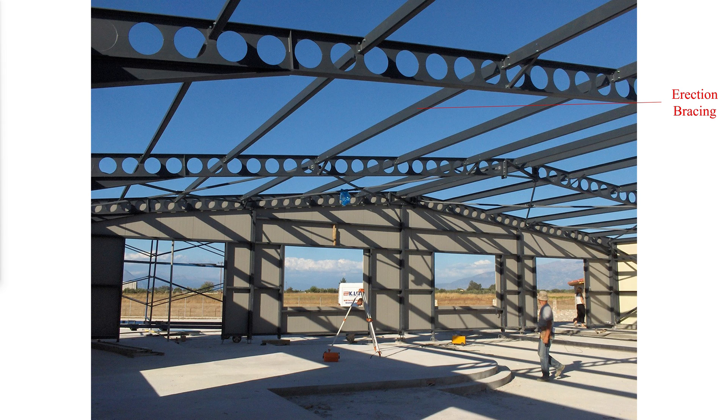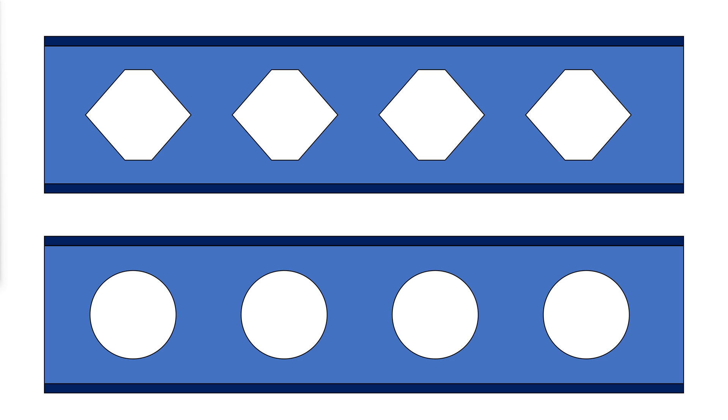The bracing requirements vary depending on span and depth and are typically determined by the beam manufacturer. The coating systems used to protect castellated and cellular beams are no different than those used to protect conventional structural steel. The system used should be determined based on the type of exposure the steel will be subject to and the desired maintenance schedule.